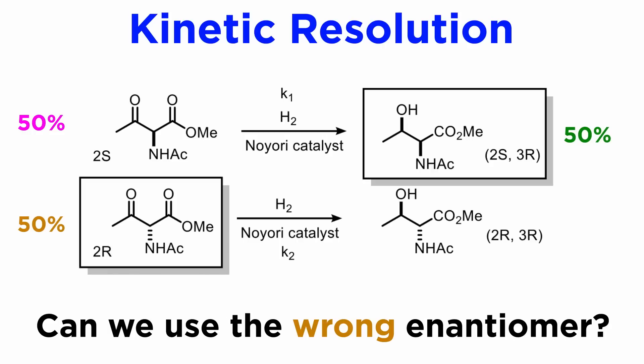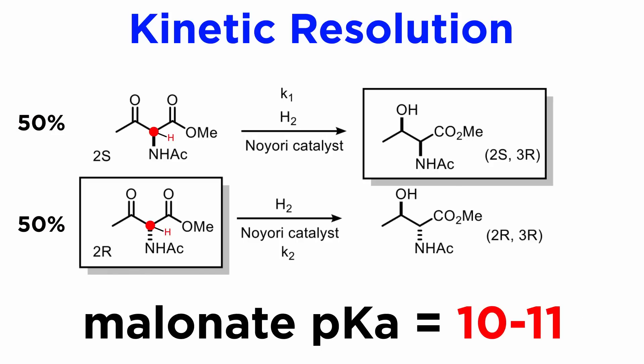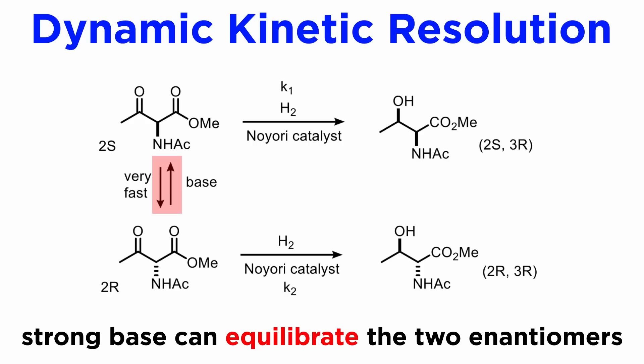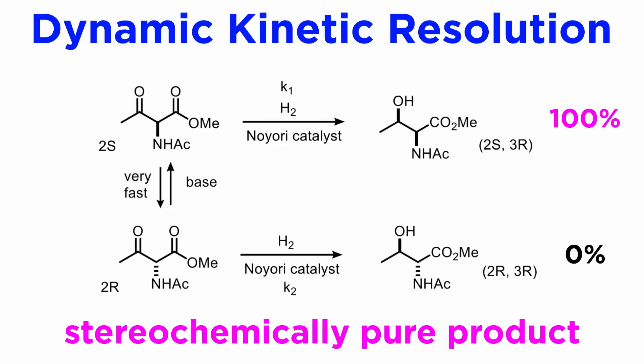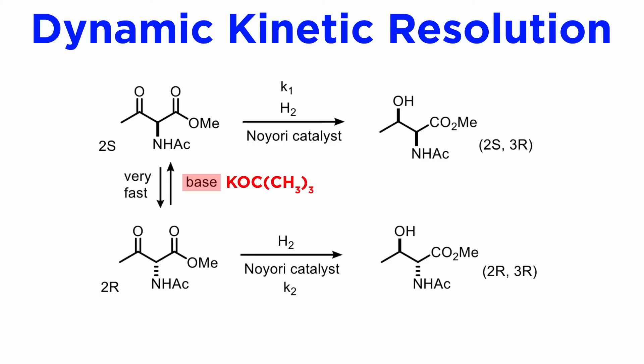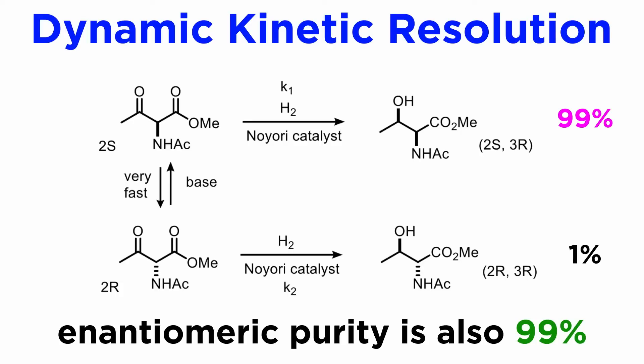It would be much more exciting if we could also utilize the wrong enantiomer. We note that the substrate is rather acidic — it is a malonate-type substrate with a pKa of around 10 or 11 — so a strong base could equilibrate the two enantiomers. If the rate of equilibration is much faster than the rate of reduction, the entire manifold can be directed through the faster-reacting 2S enantiomer. Using potassium tert-butoxide to equilibrate the substrate, and since the base is not strong enough to epimerize the product, we obtain essentially a single diastereomer in a ratio of 99 to 1, with an enantiomeric purity of 99%.